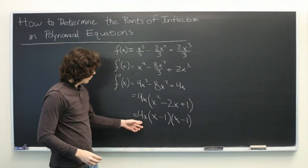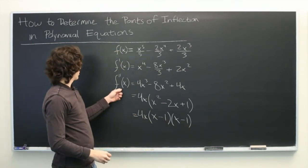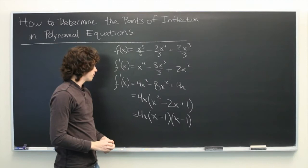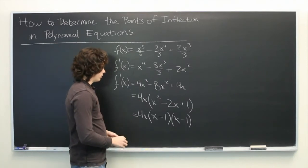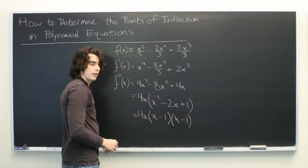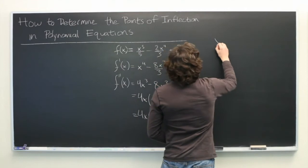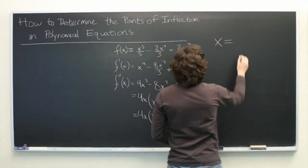So, with this information, it is fairly simple to determine where f''(x) changes sign. Since it must be at a zero, we can simply take each of these factors and set them equal to zero.